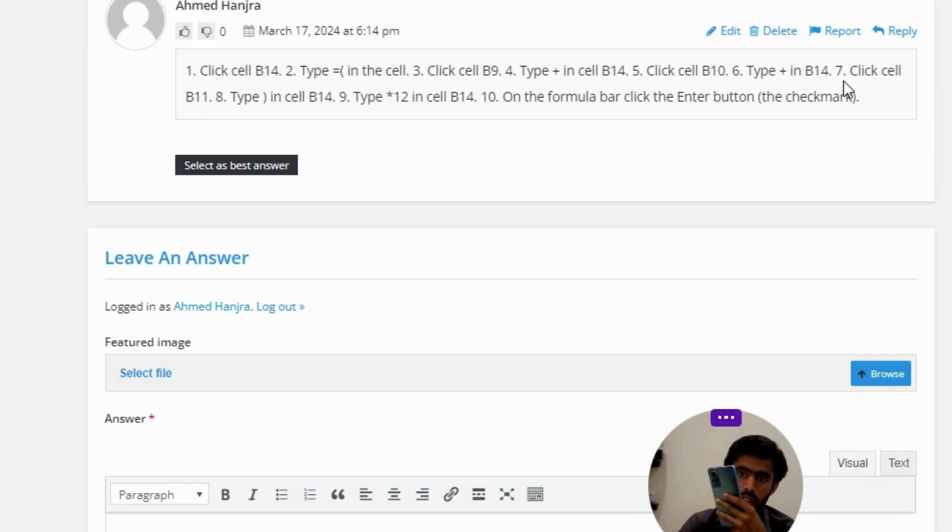Number seven, click cell B11. Number eight, type close parenthesis in cell B14. Number nine, type asterisk times 12 in cell B14.